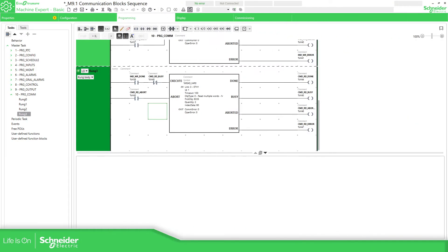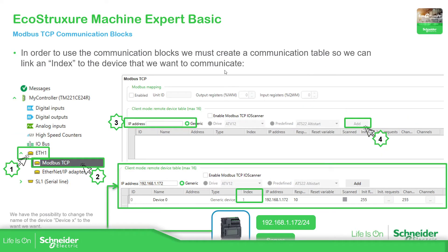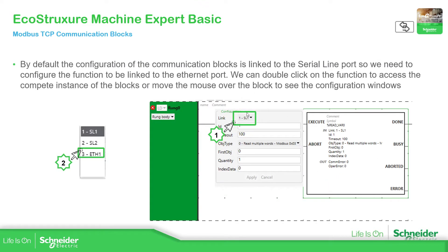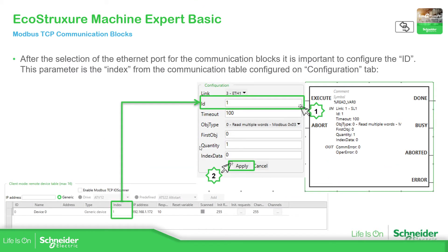In the programming tab, find the arrows to add function blocks and select the one you want to use: read, write, or read-write. Once defined, select the link or port you want to communicate through. By default it shows serial line one, but in our case we use Ethernet port one. The other thing to link is the ID, which connects to the index of the devices already defined in the table — in our case, index one, and so on if we add more devices.